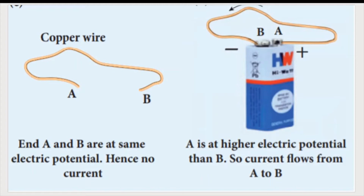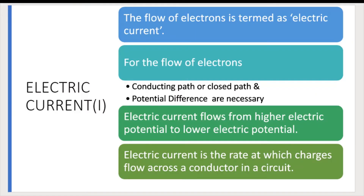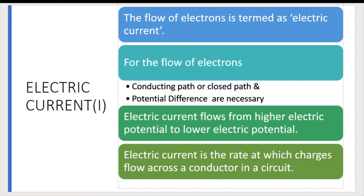When end A is at higher potential and end B is at lower potential, current starts to flow from A to B. This is known as electric current — the flow of electrons is termed as electric current. The symbol of electric current is capital I. Two important things are needed for the flow of electrons: number one, a conducting path or closed path; number two, potential difference.